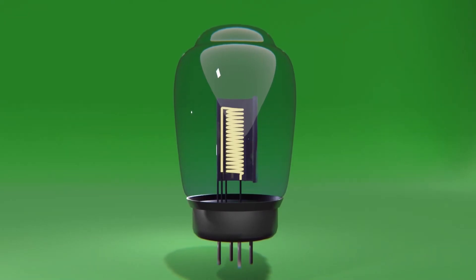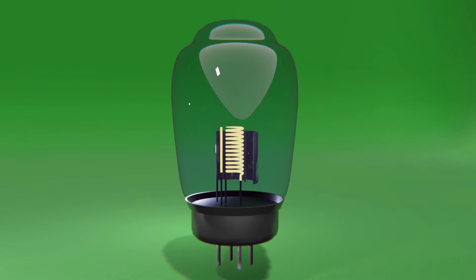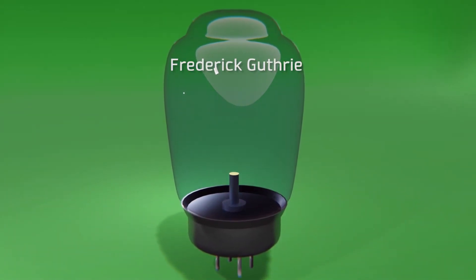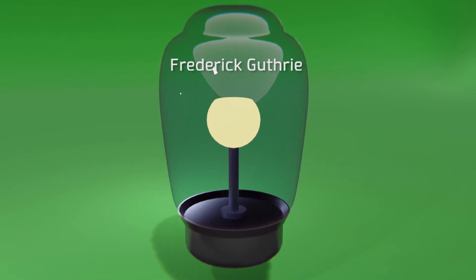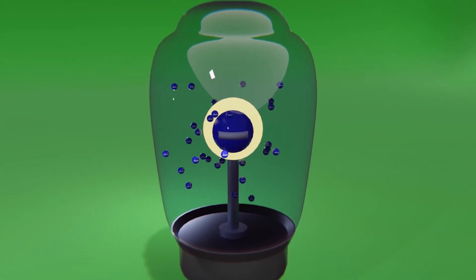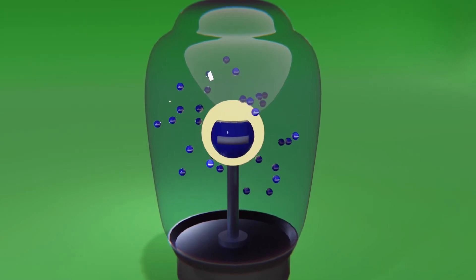To understand how a vacuum diode works we have to understand a strange behavior of metals, which was discovered by Frederick Guthrie in 1876, who in one of his experiments saw how, when heating an iron sphere with a negative charge in a vacuum it lost its charge,